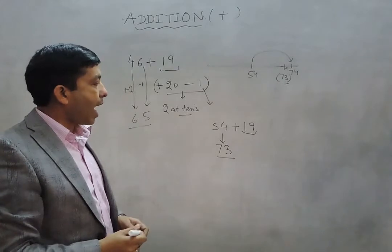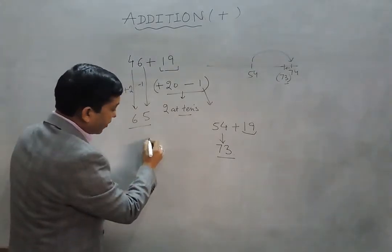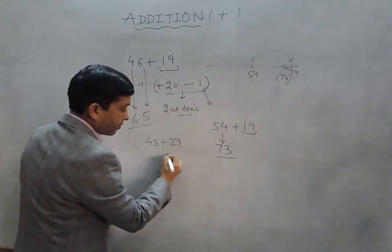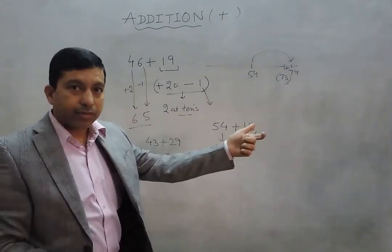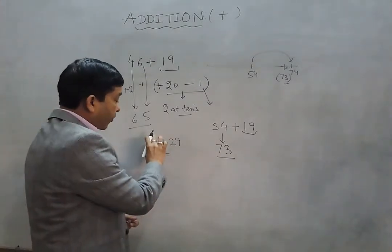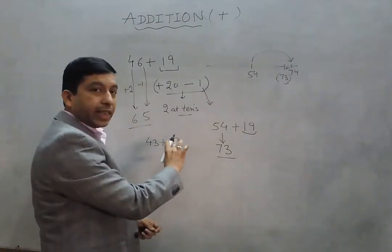Now another example: 43. We have to add 29 here. I'm saying we're adding 30, or we're adding 3 to the tens place. From 43, if we add 30, it goes to 73.